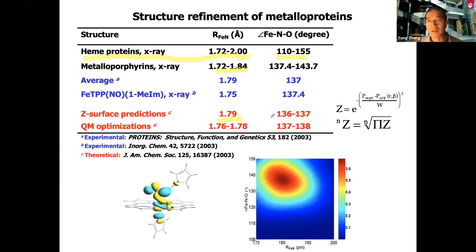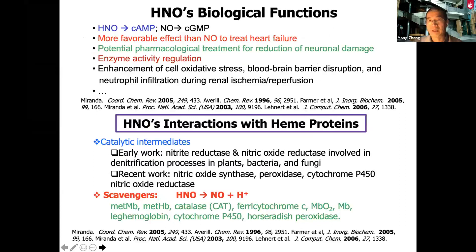Going beyond refinement — which is an improvement of existing experimental structures — more recent work from my group is to determine atomic-level structures that have no X-ray structure. For example, for etrindole, which is also a very important molecule — it can be used to regulate the secondary biochemical messenger cGMP, and it has a better effect than nitric oxide to treat heart failure. A lot of people are interested in this molecule, but there is no X-ray structure of any etrindole-bound protein. So we use heme protein as the starting point to determine a molecular-level structure.